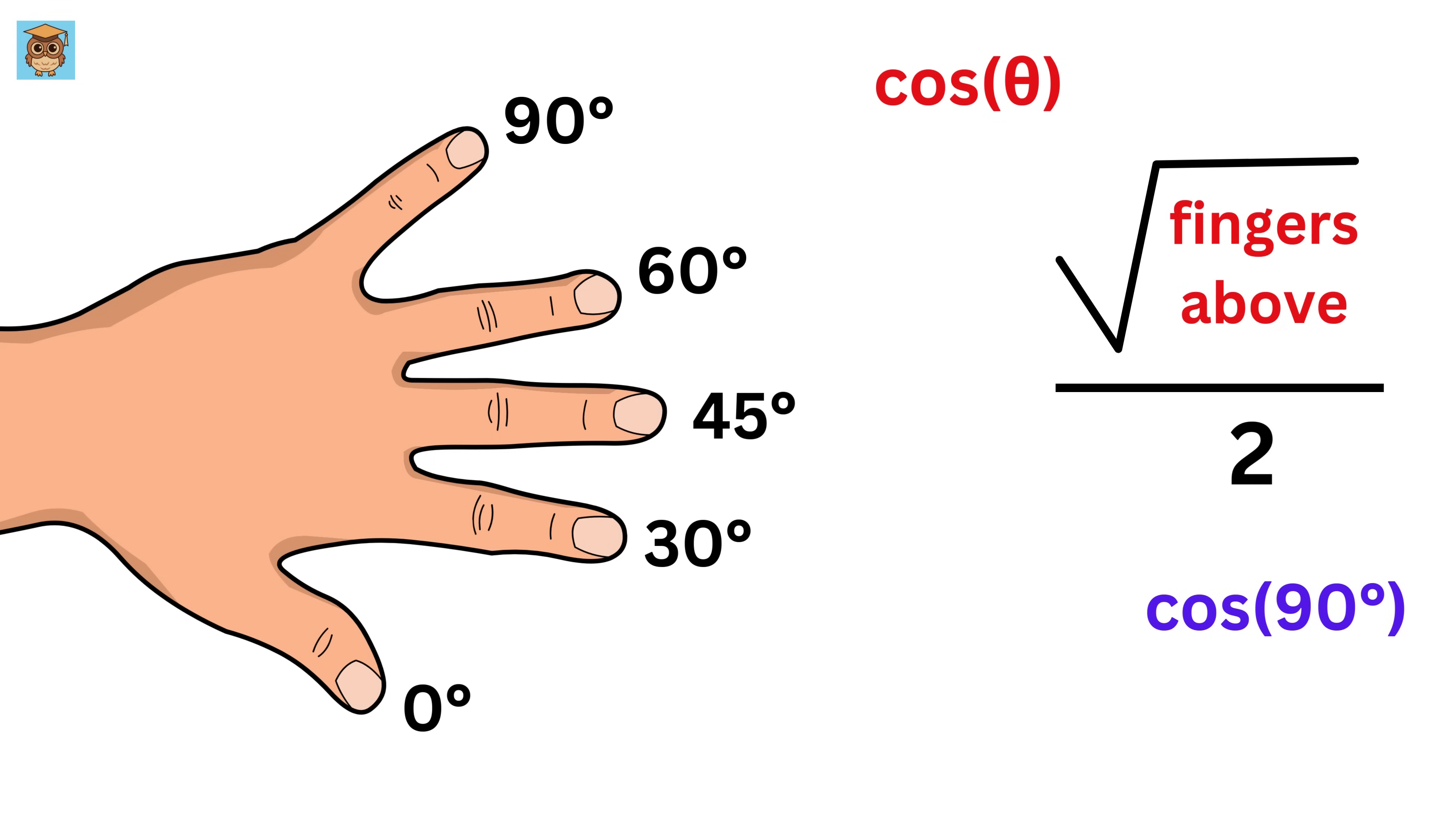Now, let us look at cos of 90 degrees. This is 90 degrees. So, the number of fingers above it is 0, because we do not have any fingers above this finger. Thus, cos of 90 degrees will be square root of 0, divided by 2, which is 0. We are on fire.